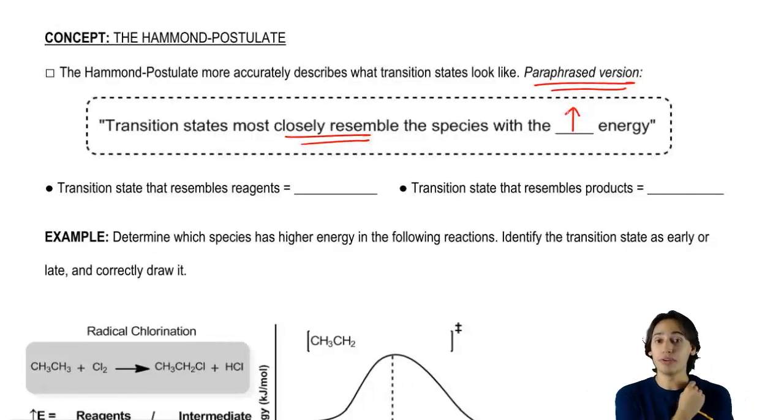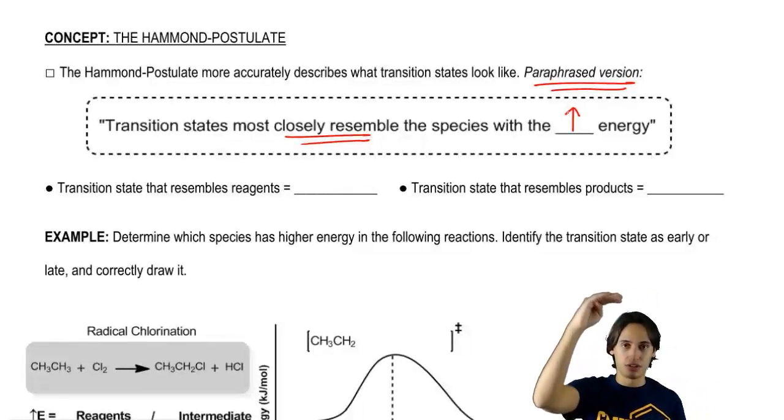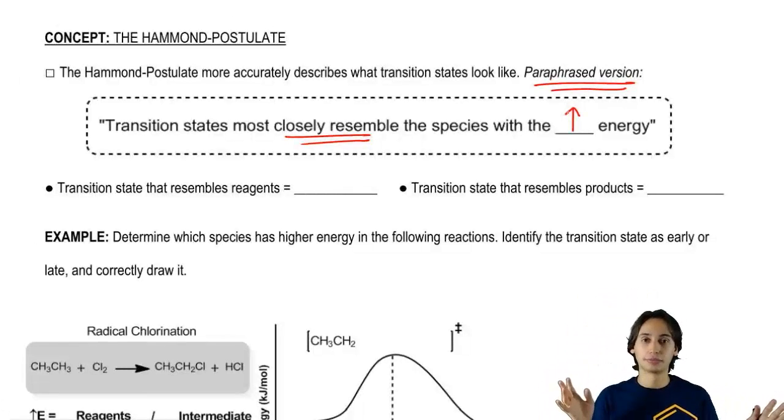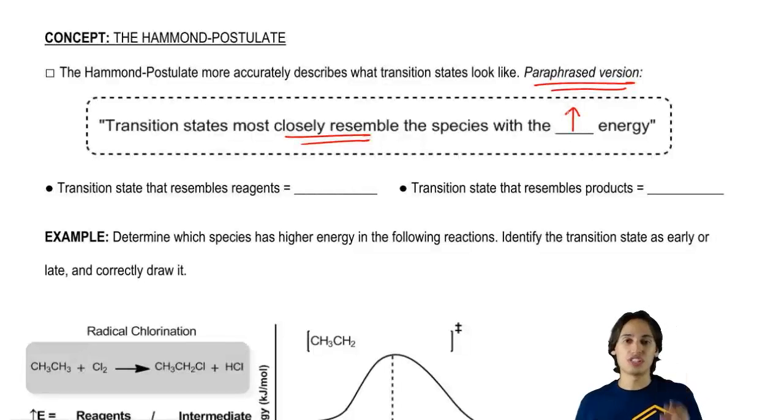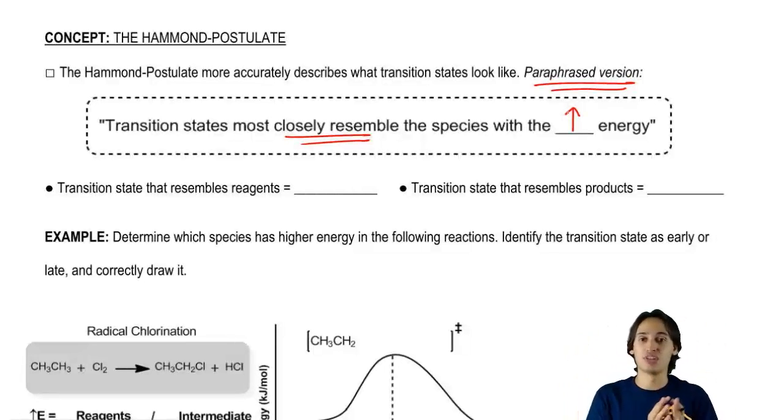So that means that remember a transition state is always going to be your highest energy point on the graph, on the free energy diagram. And it's always going to relate some higher state of energy and some lower state of energy to each other. What your transition state is going to look like is going to be like the species that has the highest energy, whether that's the beginning or the end.